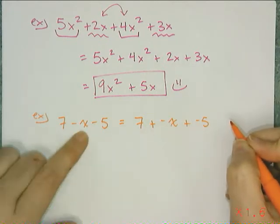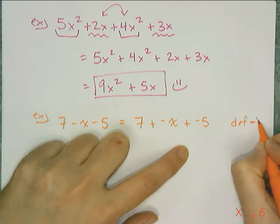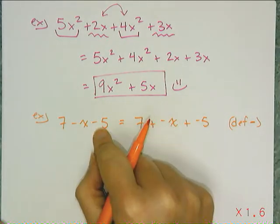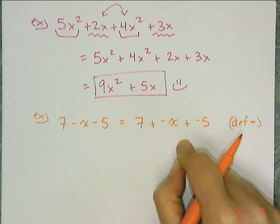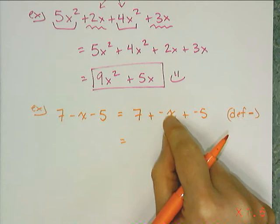Now luckily for us, we have a definition that we can use that makes this in such a way that I can move things around. And if you notice what I did was I changed those subtractions into adding a negative. And that is the definition of subtraction. Remember, subtracting is adding the opposite. So if I can't commute subtraction, then I'm going to use the definition and convert that to an addition problem and then commute.